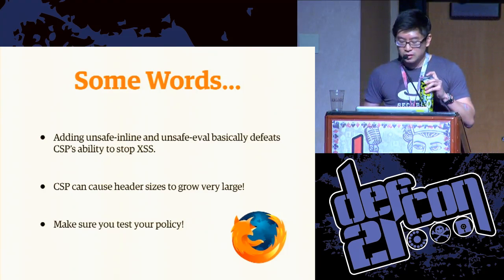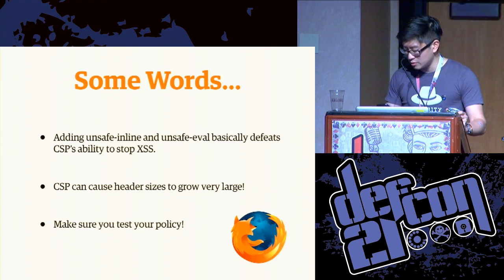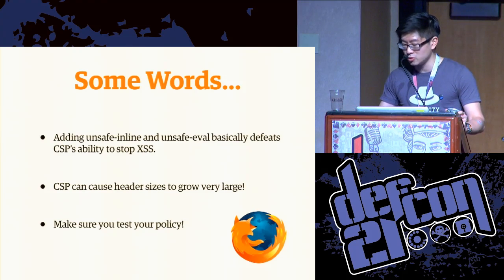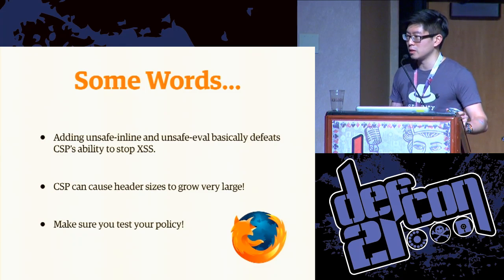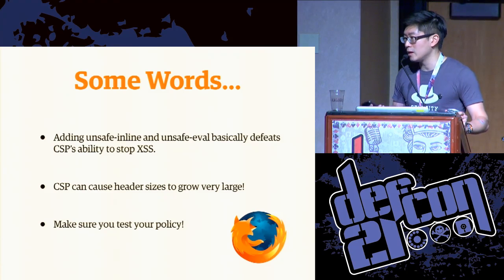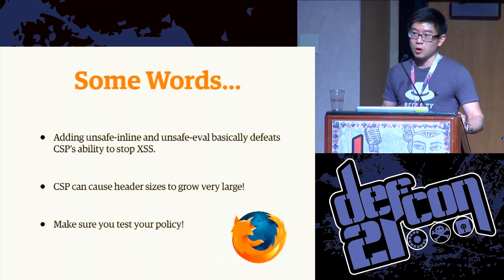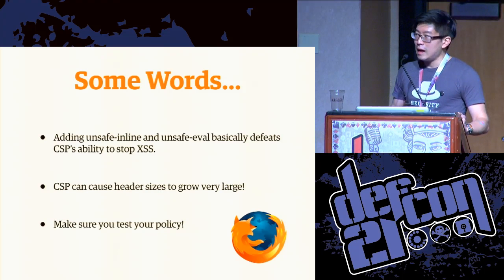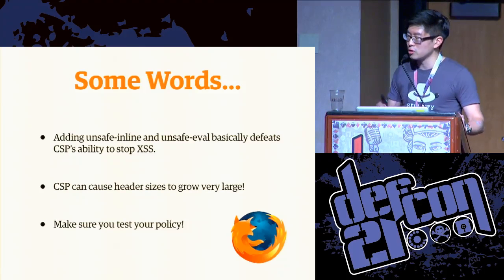A couple of additional thoughts about content security policy: unsafe-inline and unsafe-eval essentially severely nerf the protective abilities that content security policy gives you. So it's important when deploying a policy to consider whether or not you should include these directives. In addition, if you implement it as a header, you can potentially be including a very large number of sources, which can cause your header sizes to grow and potentially impact performance. And the final obvious point is that you should always make an effort to test your content security policy before you roll out to production.